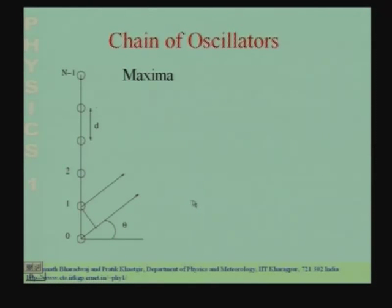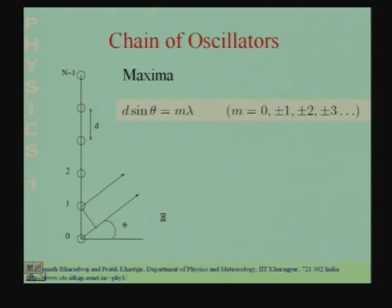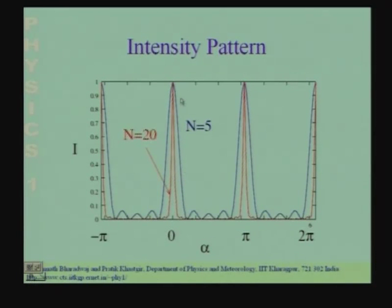We had found that there will be primary maxima whenever the condition d sin θ = mλ is satisfied, where m can be any integer: 0, ±1, ±2, ±3, etc. Whenever this condition was satisfied, there would be a maximum in the radiation received; in other directions, you would receive much less radiation. The intensity pattern of the resultant radiation had these primary maxima whenever d sin θ = mλ is satisfied, corresponding to m = 0, ±1, ±2, etc.